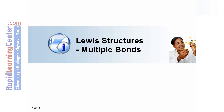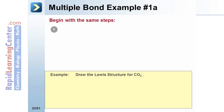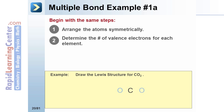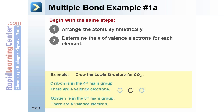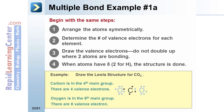How are molecules with multiple bonds drawn? Begin with the same steps: arrange the atoms symmetrically, determine the number of valence electrons for each element — four for carbon and six for oxygen. Arrange the valence electrons so they don't double up where a bond is going to form. When the atoms have eight, or two for hydrogen, the structure is done.